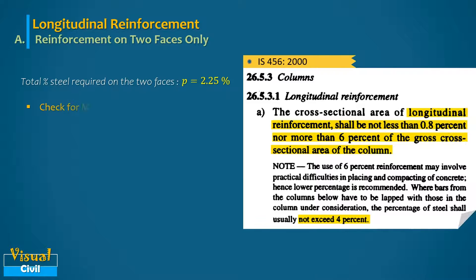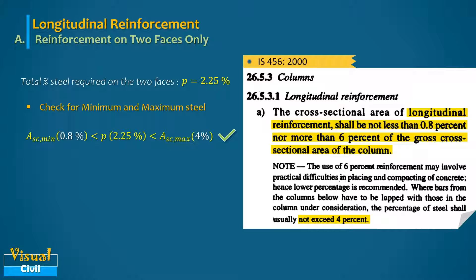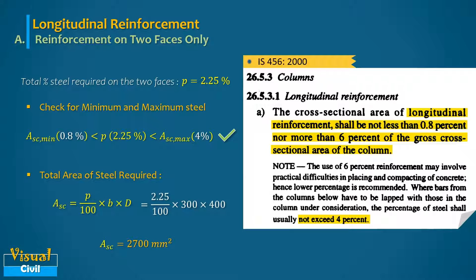As per Clause 26.5.3, the minimum longitudinal reinforcement shall be 0.8% and the maximum is 6% of the gross cross-sectional area, though for practical purposes the maximum is taken as 4%. The calculated percentage steel of 2.25% satisfies the minimum and maximum conditions. The total area of steel required is 2700 mm².